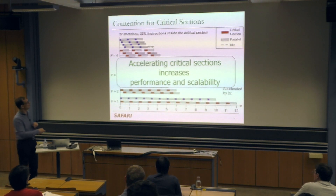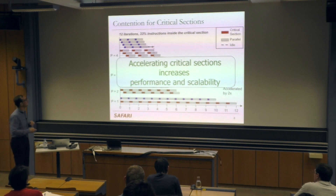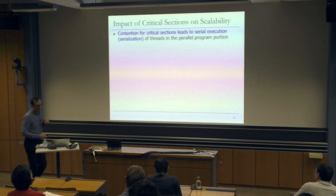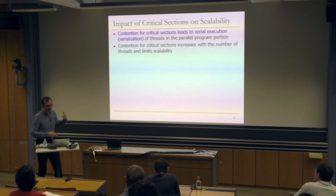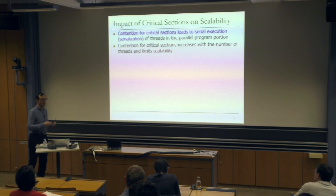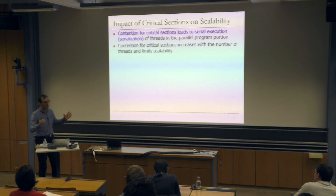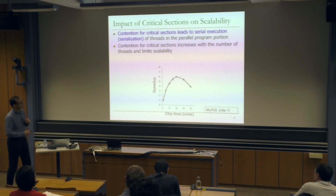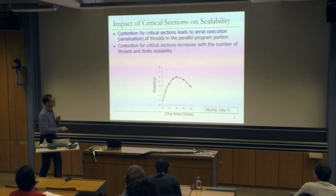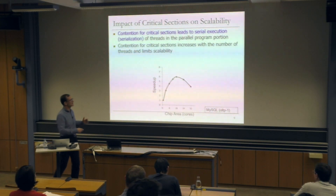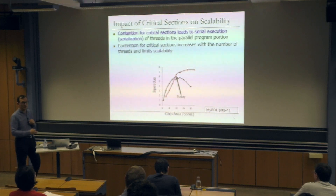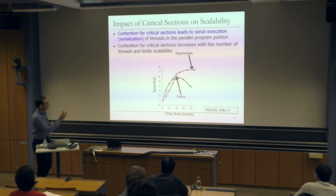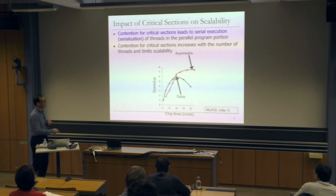You can parameterize this and come up with nice equations — in the end, it's Amdahl's law. The impact of critical sections on scalability: contention for critical sections leads to serial execution of threads, and that increases with the number of threads, limiting scalability. As we keep adding cores, contention increases and the communication needed for shared data locks also increases. But if you have an asymmetric core — with the large core accelerating critical sections — you shift to a better performance curve. Later works improved this further and made it more scalable.